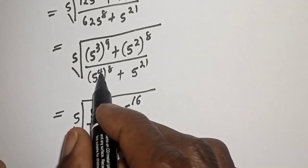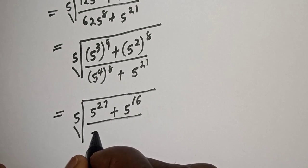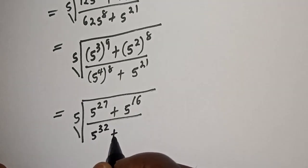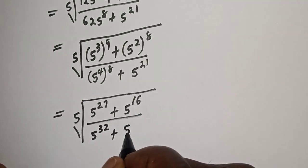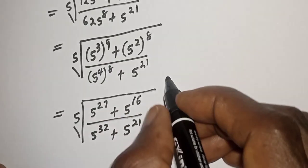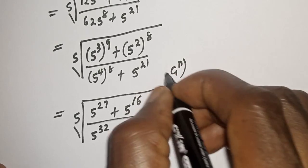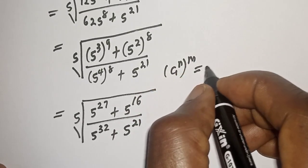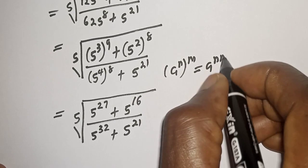Over 5 raised to power 4 times 8, that is 32 — so 5 raised to power 32 — plus 5 raised to power 21. Note that if you have a raised to power n, to the power of m, this is equal to a raised to power n times m.